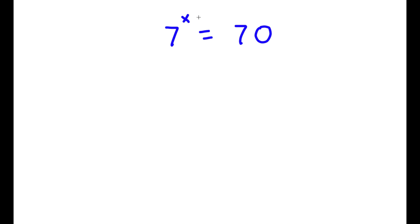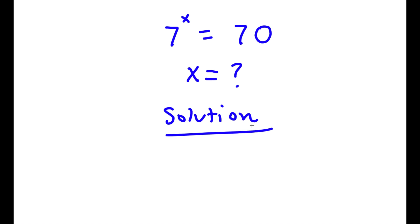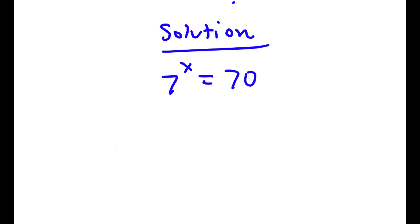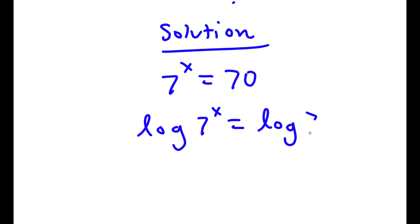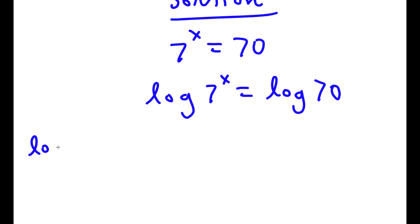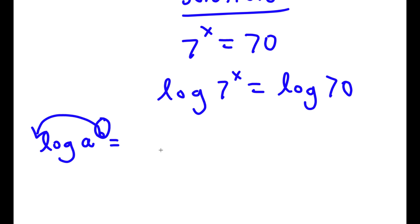Alright, so I have 7 to the power of x is equal to 70. I obviously want to find the value of x. Starting with 7 to the power of x equals 70, I'm going to take the log on both sides. So now I have log 7 to the power of x is equal to log 70.